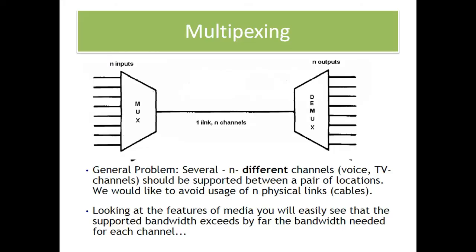A multiplexer is nothing but multiplexing — many inputs and one output. A demultiplexer has only one input and many outputs. Generally, this multiplexing technique is used to transfer digital data through space. Before going into detail about baseband digital transmission, we must know what is meant by multiplexing.